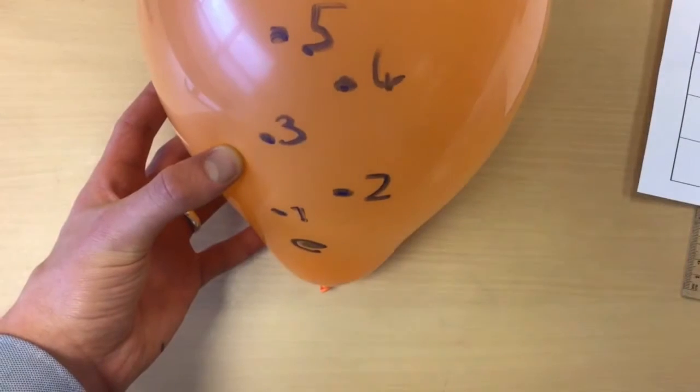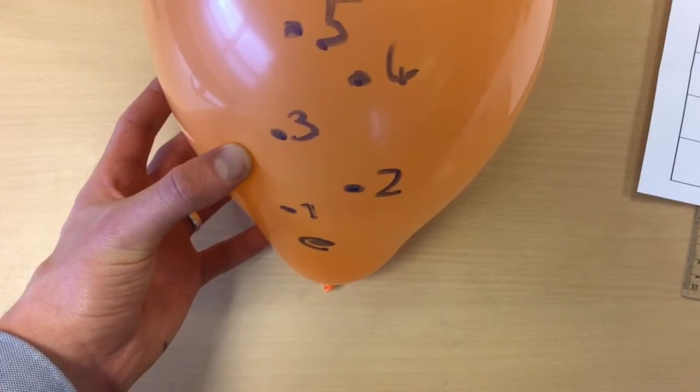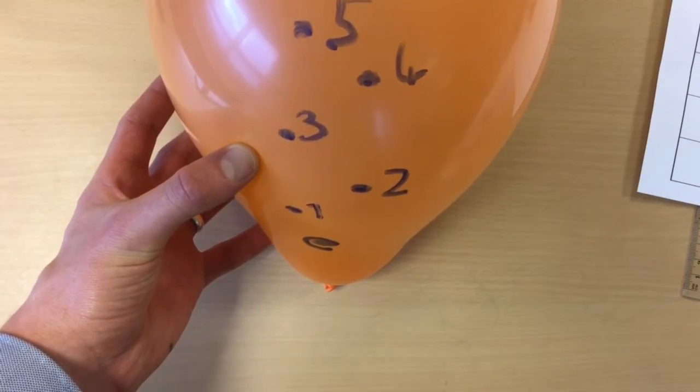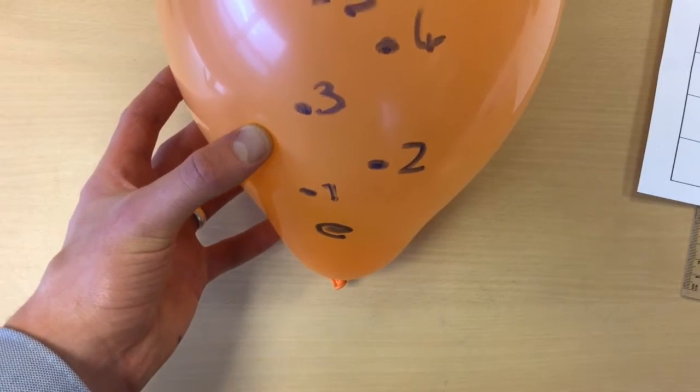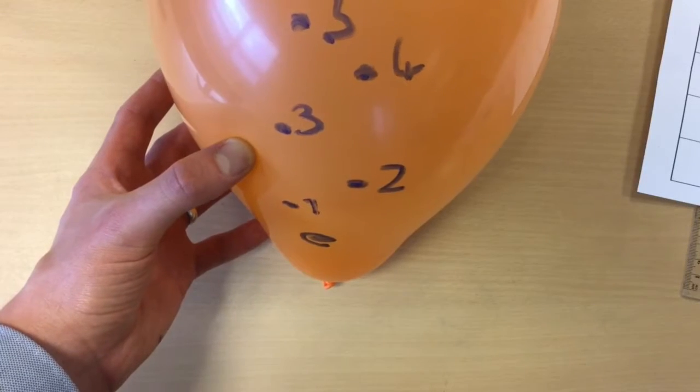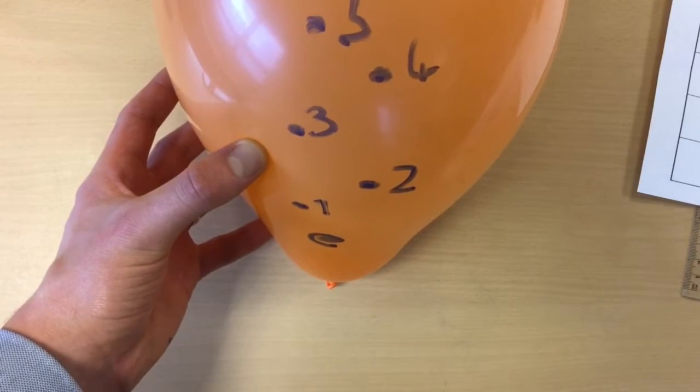So here's my balloon. I've blown it up and you can see that it's a lot bigger than before. And what we're going to do is we're going to measure the distance between the Milky Way and each of the points again but for the bigger size. And we're going to put that back into our table.